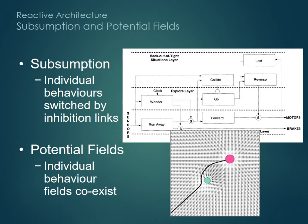On the other hand, the potential fields approach merges the different behaviours together by adding up their individual action fields. So a 'chase me' field from a prey target may interact with a 'run for it' field from a nearby predator. Here in the slide, the green obstruction creates a repulsive field, while the red target has an attractive one, leading to the least potential route shown.